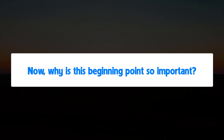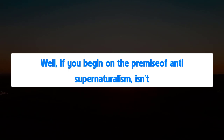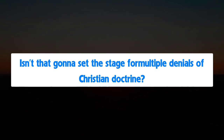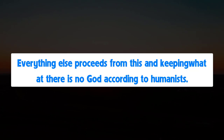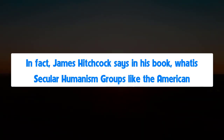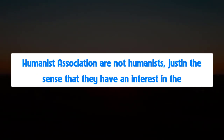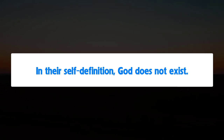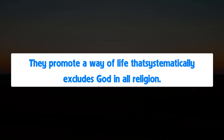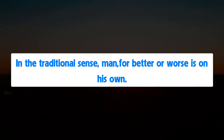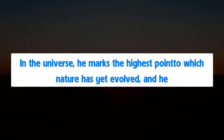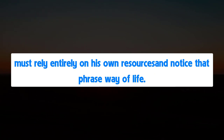Why is this beginning point so important? If you begin on the premise of anti-supernaturalism, isn't that going to affect everything else and set the stage for multiple denials of Christian doctrine? There is no God according to humanists. James Hitchcock says in What is Secular Humanism? that groups like the American Humanist Association promote a way of life that systematically excludes God and all religion in the traditional sense. God does not exist. Man, for better or worse, is on his own in the universe — he marks the highest point to which nature has yet evolved and must rely entirely on his own resources.